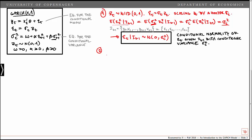Second, like we did with the ARCH model, we can decompose epsilon_t squared into two parts: first, the conditional expectation — the expected value of epsilon_t squared conditional on the information set last period — plus v_t, which is a surprise term uncorrelated with I_{t-1}. So we decompose the random variable epsilon_t squared into its conditional expectation and a surprise term that is orthogonal to the information set.